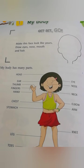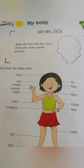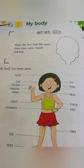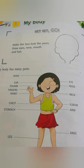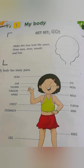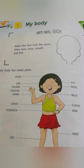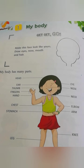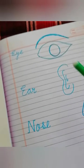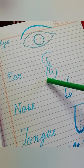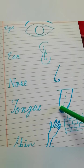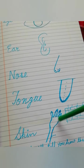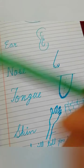Children, do you know our body is the most amazing machine? How do we know what is happening around us? Because we have five friends — eye, ear, nose, tongue and our skin. These are our five friends, and they help us to know what is happening around the world.